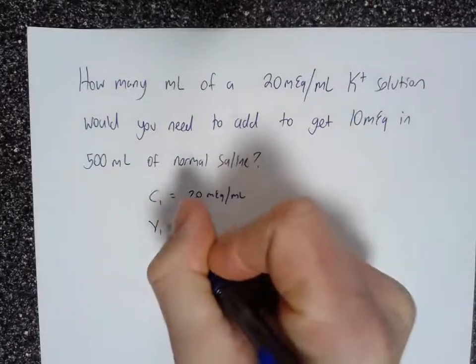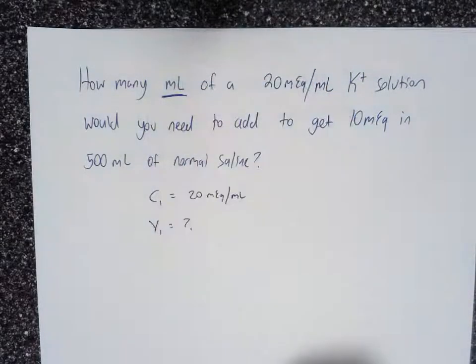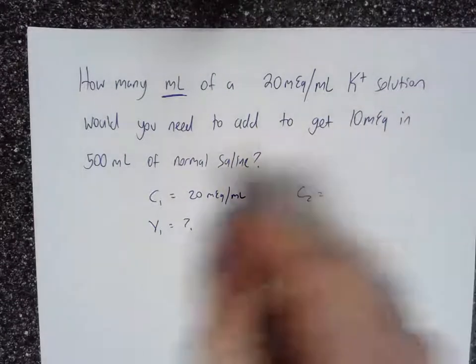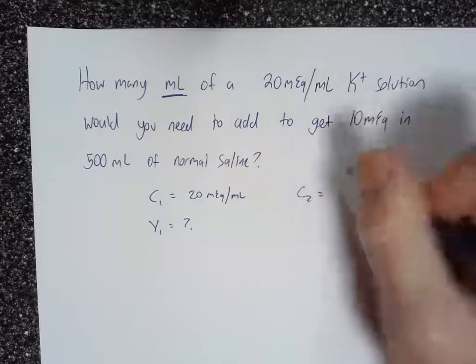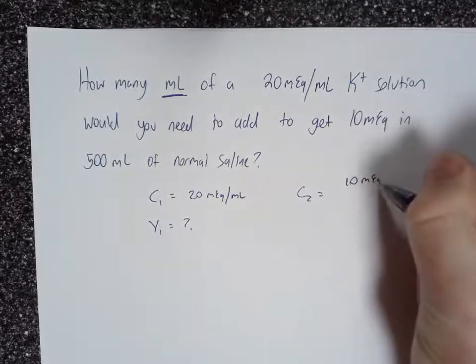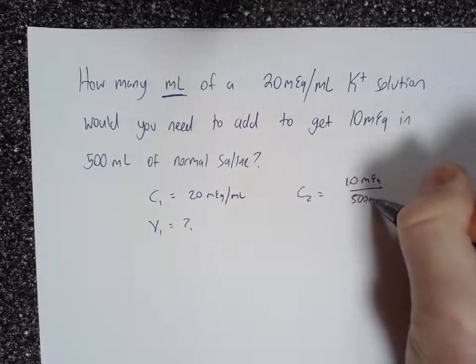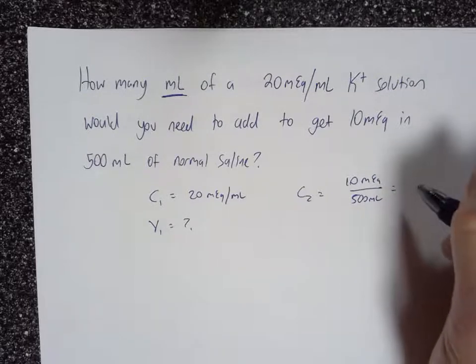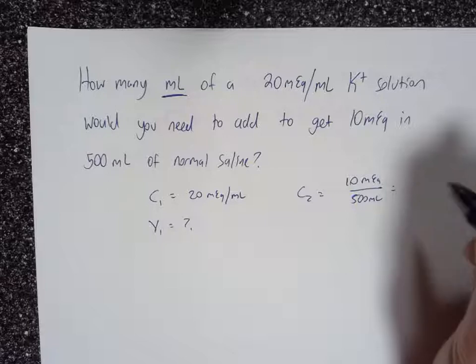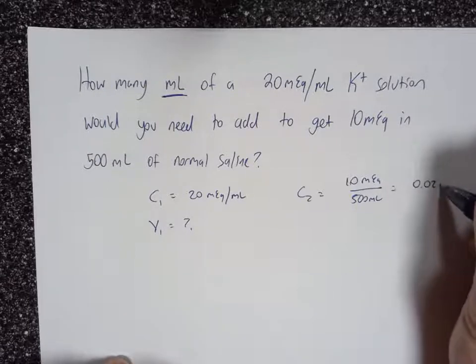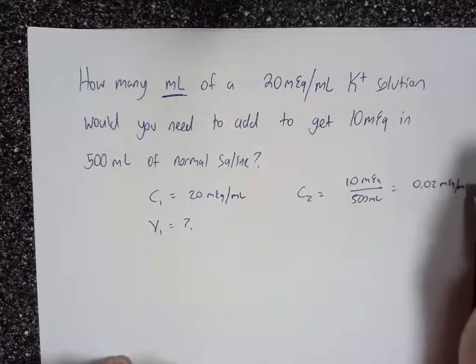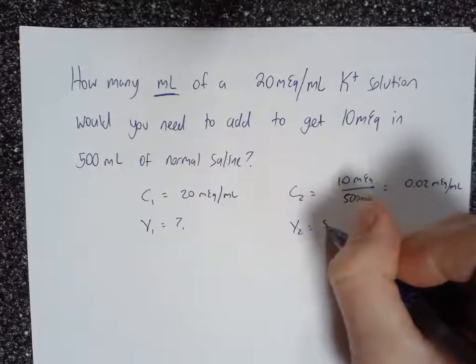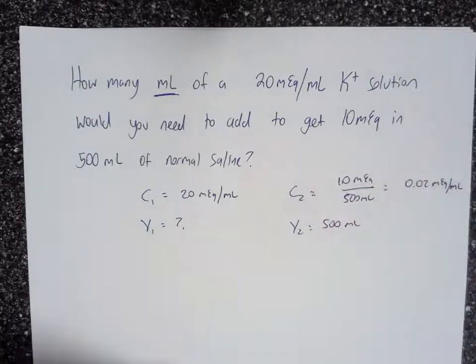V1 is what we're interested in, how many milliliters, that's the prompt. C2 is actually these two numbers divided by each other, so 10 milliequivalents over 500 milliliters, which equals 0.02 milliequivalents per milliliter. So that's C2 and V2 of course is 500 milliliters.